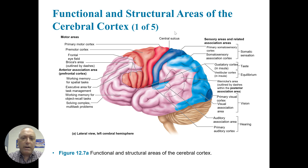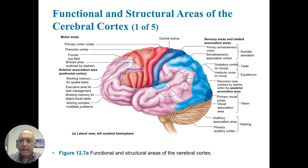There are motor areas and sensory areas. If you look at the central sulcus, anterior to it is the motor cortex. There are other areas like Broca's area, which is for speech, and anterior association cortices, which are drawn upon for memory, executive function, problem-solving, and multitasking. Posterior to the central sulcus, we have the sensory cortex, or primary somatic sensory cortex, and various association cortices, with areas for taste, hearing, and vision.